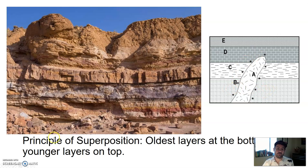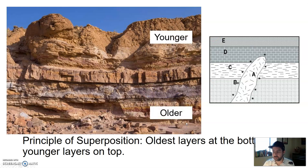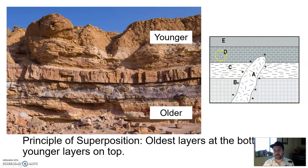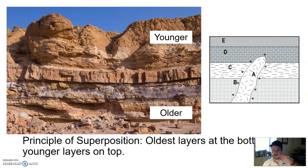The reason is based on the principle of superposition — in general, oldest layers are at the bottom and youngest layers are at the top. So looking at this outcrop, older is at the bottom and younger is at the top, usually, not in all cases. In this case, I would say the oldest rock is B, then C, then D, then E. But what about A? It looks like igneous rock coming up and cutting through these other horizontal layers, which are most likely sedimentary layers.